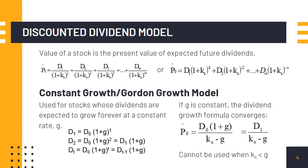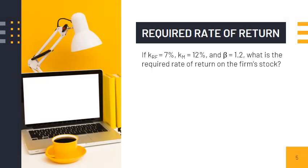The main inputs to the constant growth model are the dividends, the required rate of return, and the growth rate. Let's have a recap on how the required rate of return is computed using the capital asset pricing model or security market line formula. The formula is expressed as follows: k sub s is equal to k sub rf plus the quantity k sub m minus k sub rf times beta.